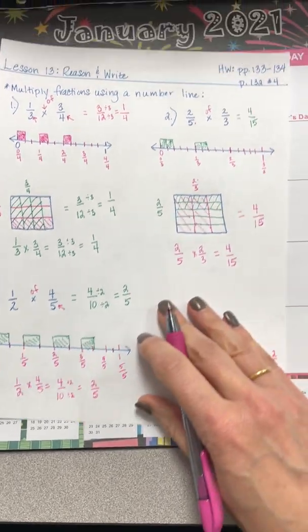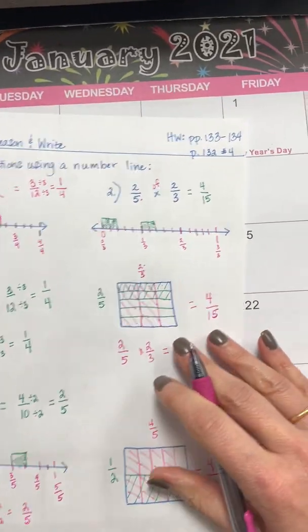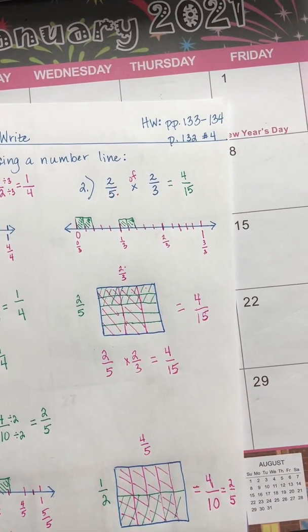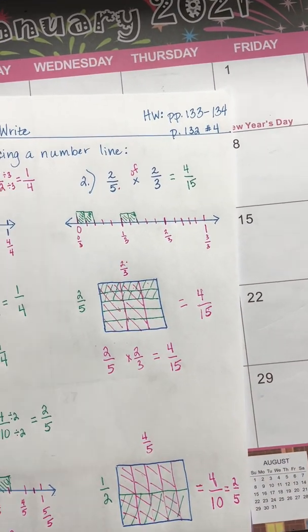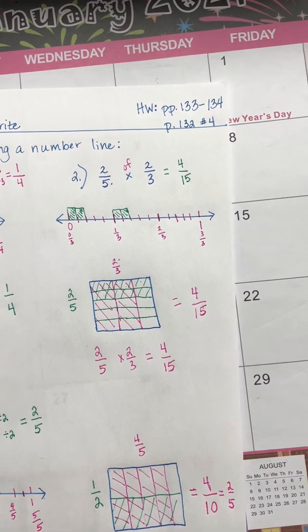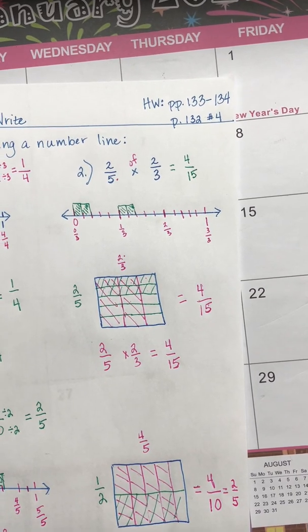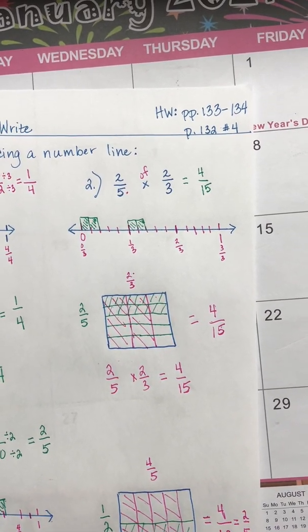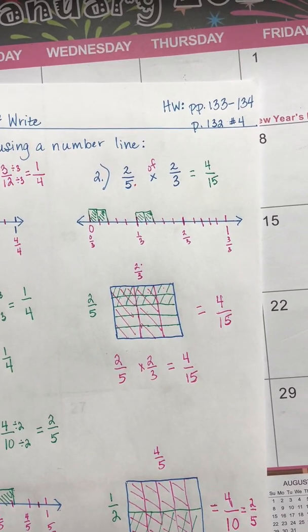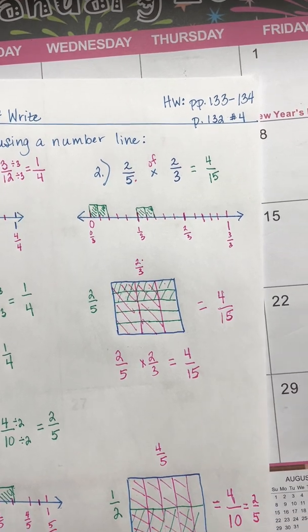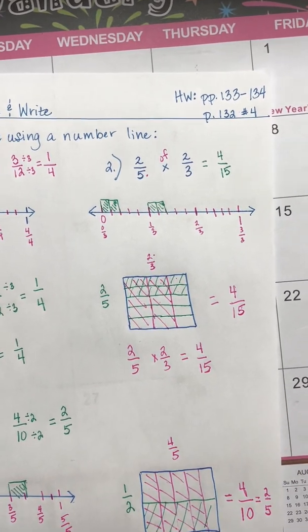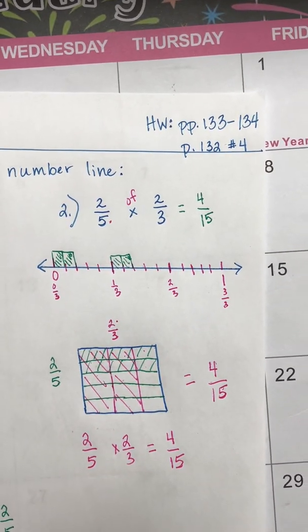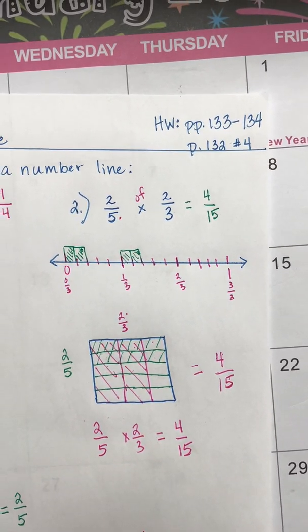Homework tonight is pages 133 and 134. And I want you to go back to page 132 and do number four now that you know how to work the number lines — go ahead and proceed with number four on page 132 from yesterday.